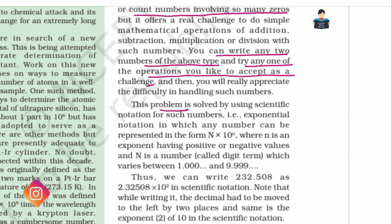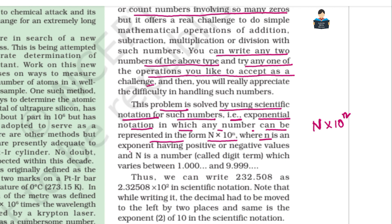This problem is solved by using scientific notation for such numbers. We use exponential notation, in which any number can be represented in the form N × 10^n. Here, n is an exponent having positive or negative values, and N is a number called the digit term, which varies from 1.000 to 9.999.